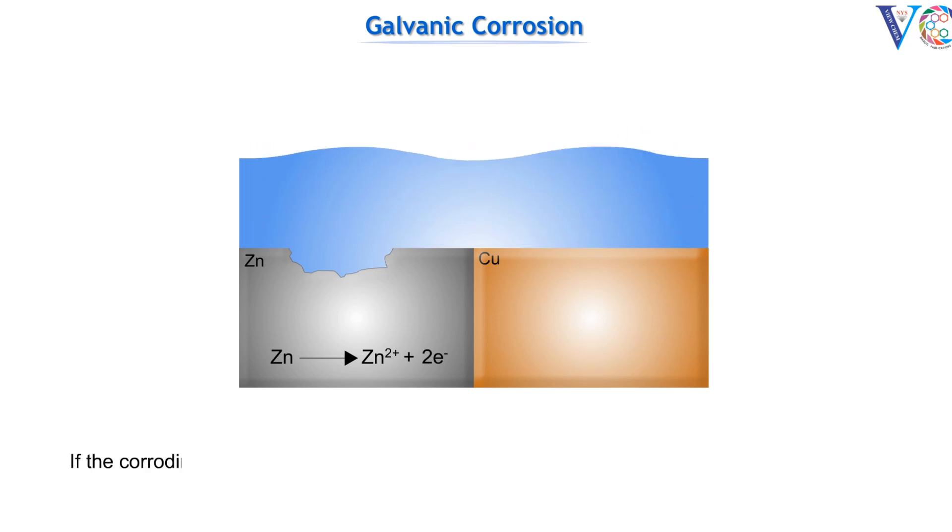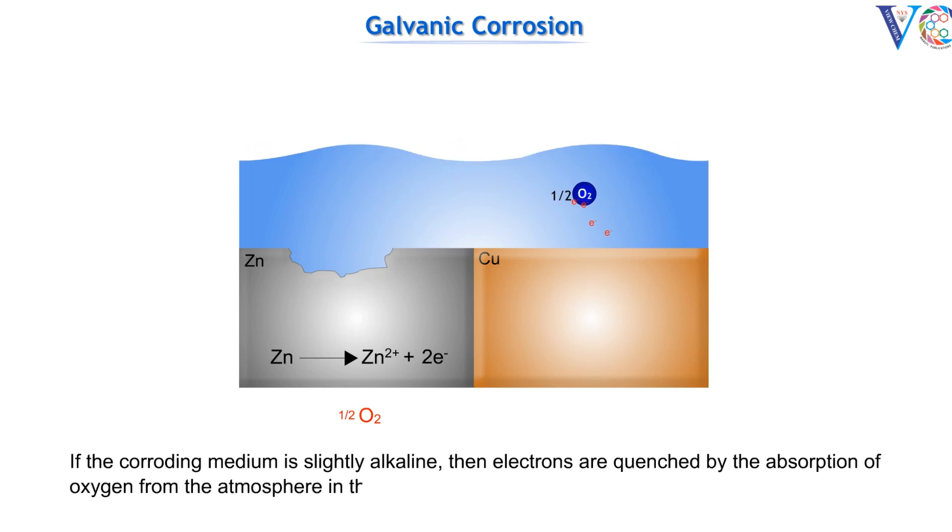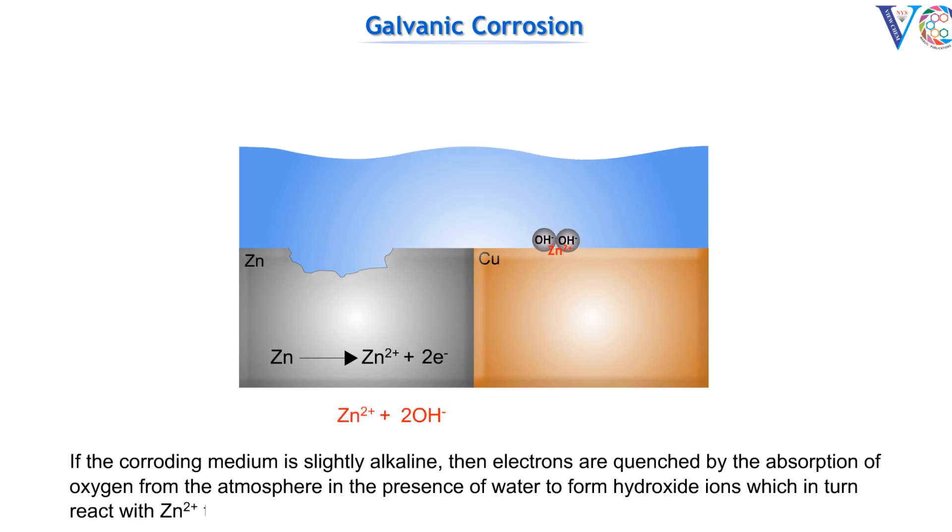If the corroding medium is slightly alkaline, then electrons are quenched by the absorption of oxygen from the atmosphere in the presence of water to form hydroxide ions, which in turn react with zinc 2 plus ions to form zinc hydroxide.